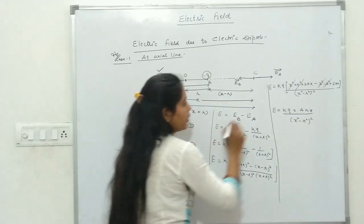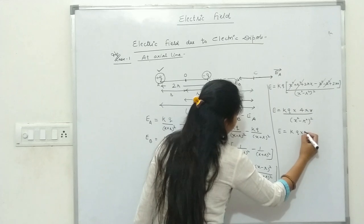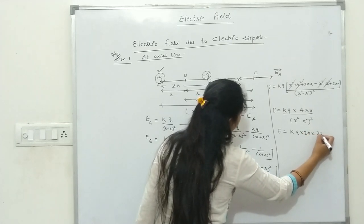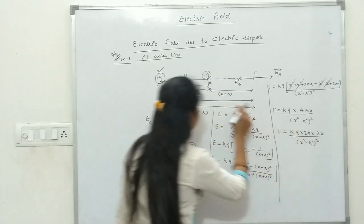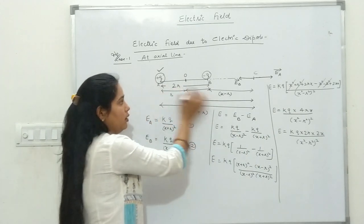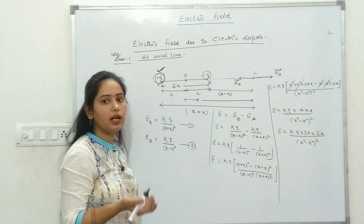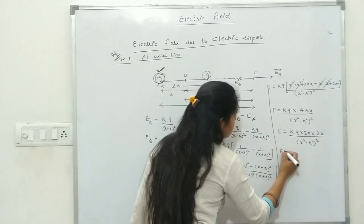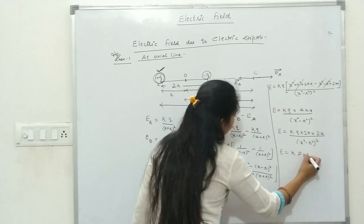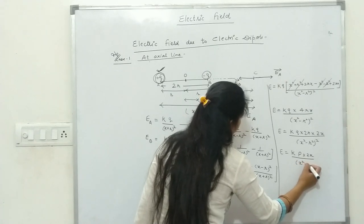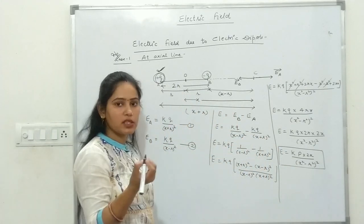4XR ko 2R × 2X likh sakte hain: E = K × (Q × 2R) × 2X / (X²−R²)². Q × 2R dipole moment P hai, isliye: E = K × P × 2X / (X²−R²)². Yeh general formula hai axial point ke liye. Ab ek approximation lete hain — for short dipole, 2R << X (dipole length bahut choti hai observation point ki distance se).